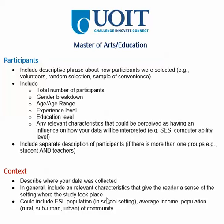You can include ESL population, for example, if it was in a school setting, average income, whether the population was rural, suburban, or urban, and actually a number describing the size of the population — for example, 400,000 or 2 million. Those characteristics can make a difference. In a sense, you're giving the reader a description of how generalizable your research is.